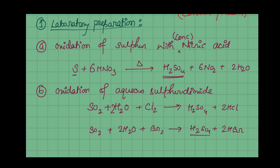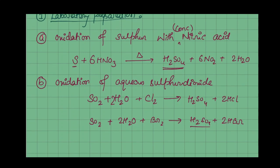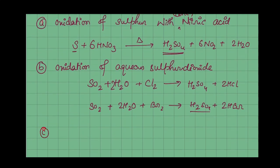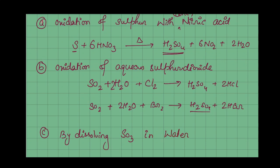To summarize: reacting sulfur with nitric acid gives us H₂SO₄; oxidizing sulfur dioxide also gives us H₂SO₄. Additionally, there is a simple method: by dissolving SO₃ in water — SO₃ + H₂O gives H₂SO₄.